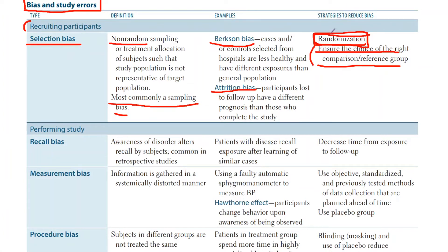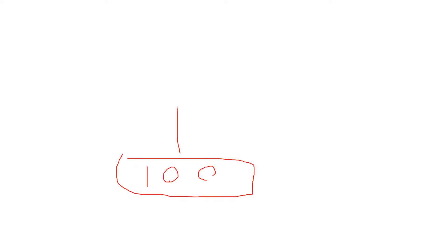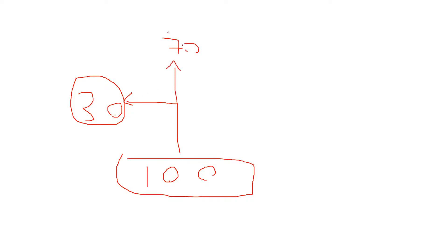With attrition bias, some participants are eventually lost to follow-up, which gives you a biased result. For example, if we have a group of 100 people and 30 of them didn't complete the study — either they left because they weren't tolerating the medication, or maybe they died from it — and 70 had perfect results and managed to alleviate the disease using the medication.